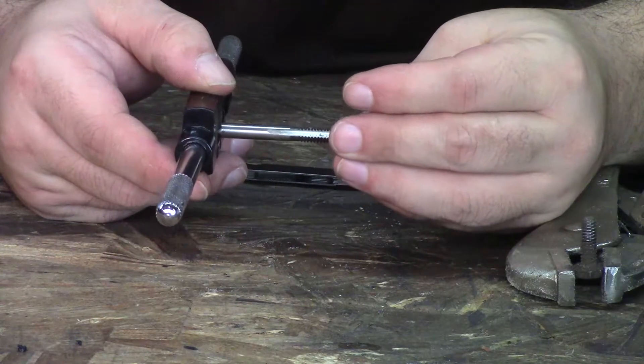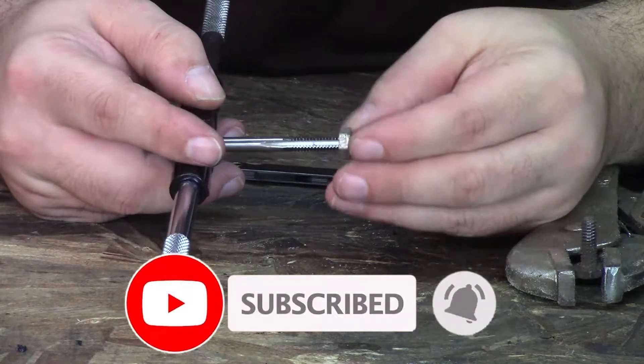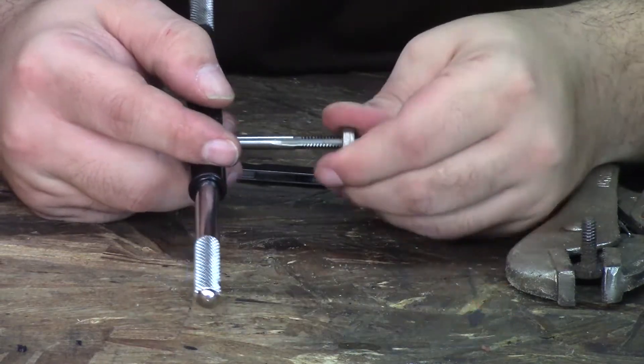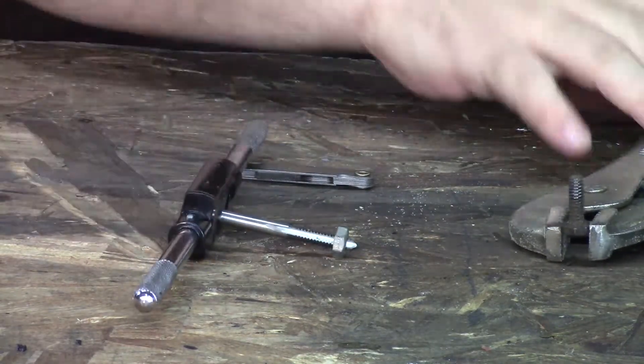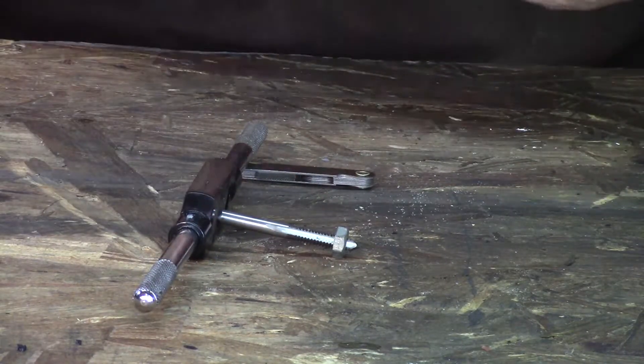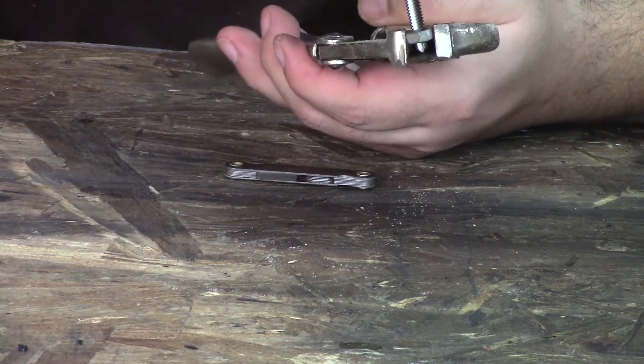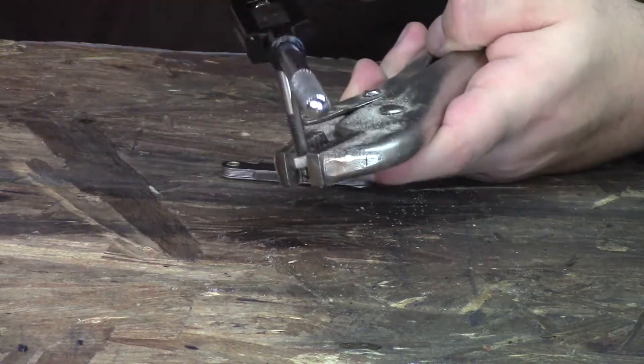You do want to make sure that the first few threads on the tap are aligned correctly, because if not you'll cross-thread it and it'll go in crooked the entire time. Now all you gotta do is screw it in.